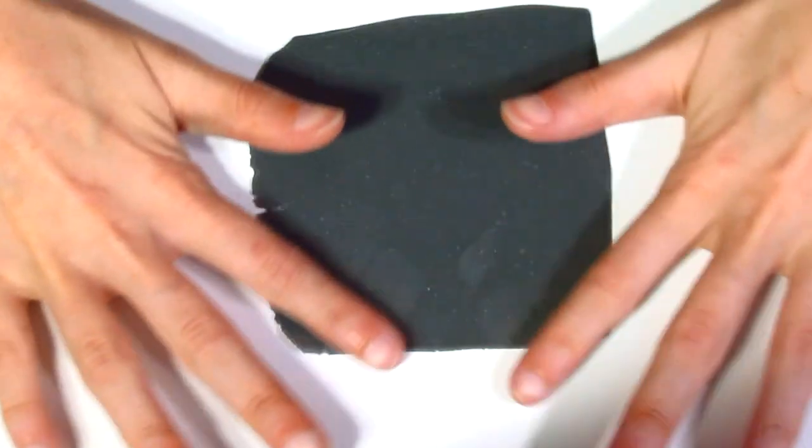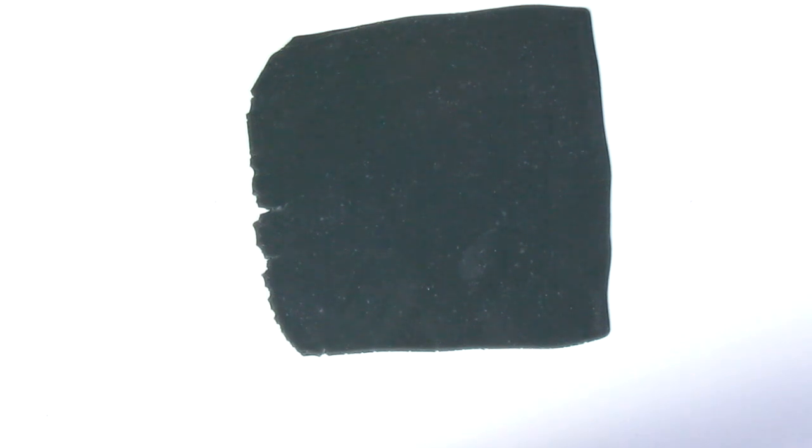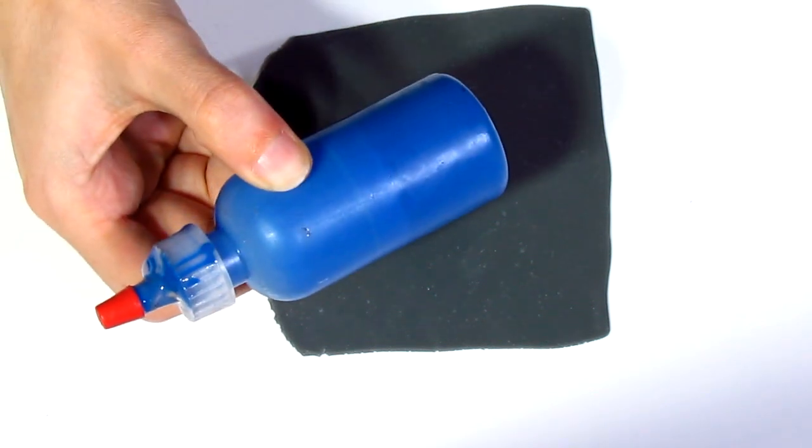So today you're going to mix up some custom colors. The first color that I've got here is 20 parts translucent to one part black and then I also added a fair amount of blue liquid clay to tint it.